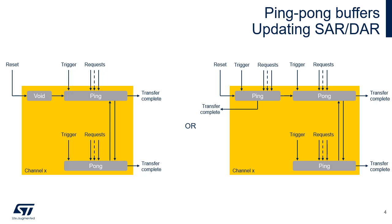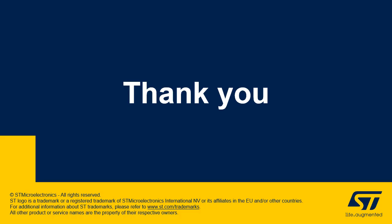Then the same sequence repeats. The figure on the right describes a sequence in which LLI 0 directly configures the DMA to execute the ping buffer and afterwards load the LLI pong buffer from memory. With the double buffer management case, when the pong buffer is full, a second LLI in memory to describe the ping transfer is always needed.